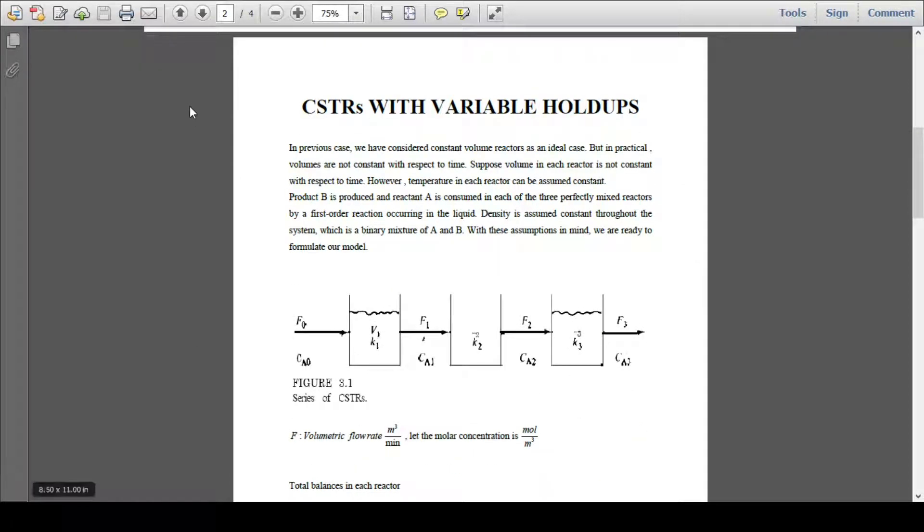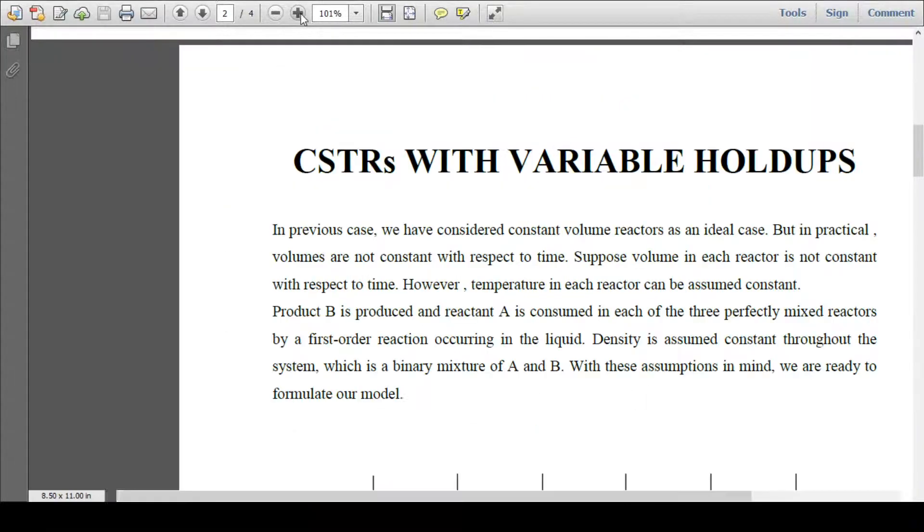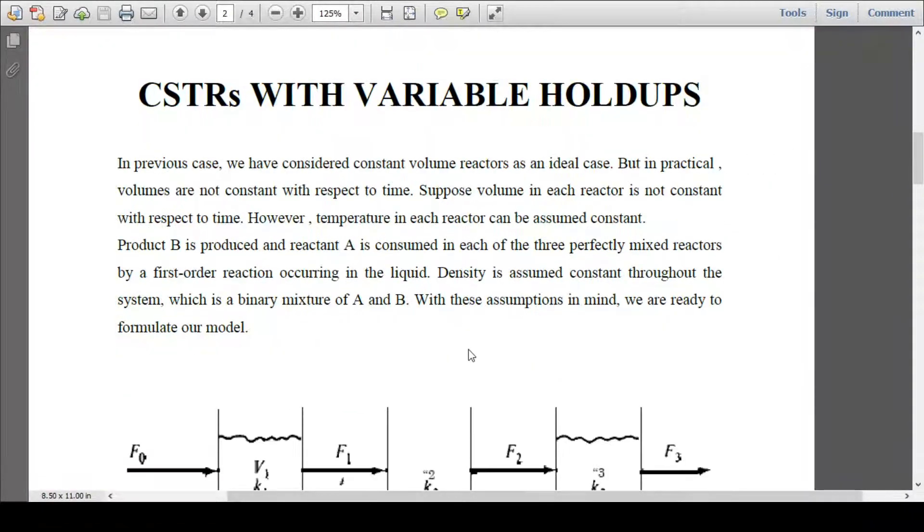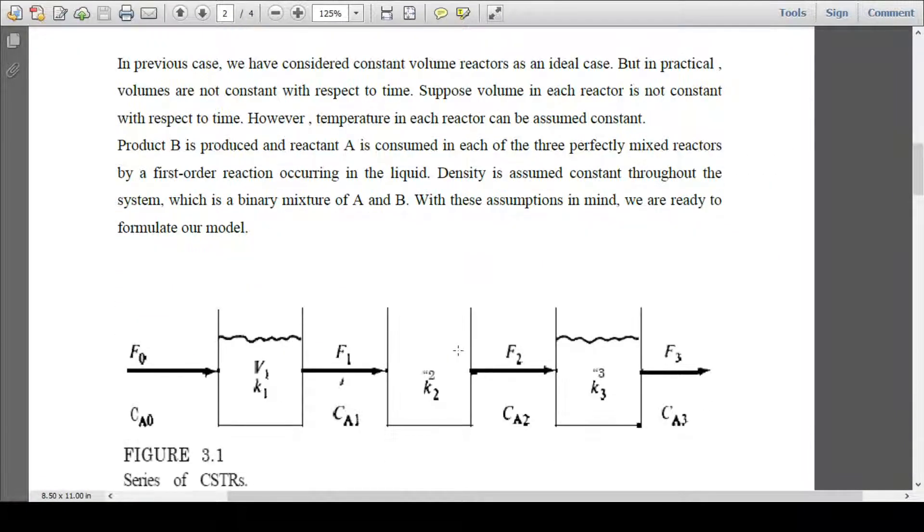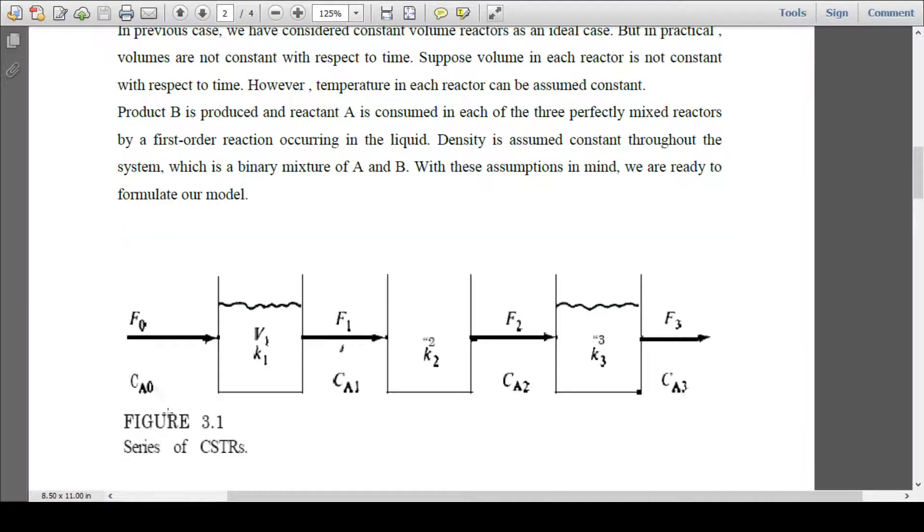So if you see the CSTRs with variable holdup, they will look like this. In this case, you have a feed which you are charging with a concentration F0 or Ca0 to a reactor which has volume V1 and reaction rate constant K1. The product of this, F1 and concentration Ca1, is being charged to another reactor having volume V2 and rate constant K2.